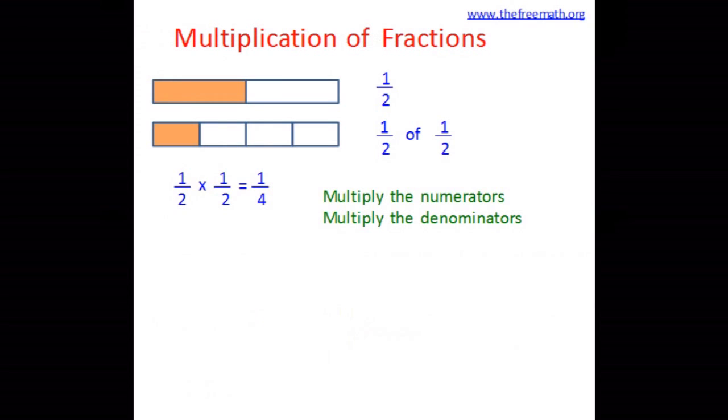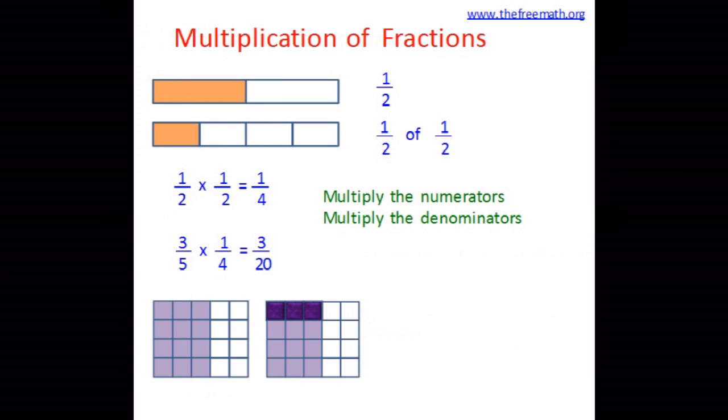That means when you multiply two fractions, you multiply the numerators and you multiply the denominators. Now this is 3 over 5 multiplied by 1 over 4. So we multiply the numerators, answer is 3. We multiply the denominators, answer is 20. So the answer is 3 over 20. Now is it correct? Can we check using some diagram, some picture? Let's do that.